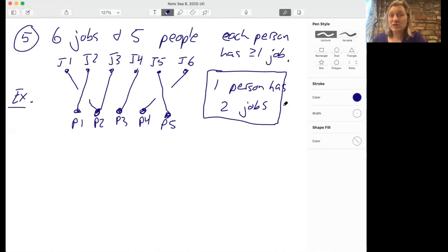And the first thing that we notice in making this example is that one person has two jobs. So that's nice because this is true no matter how we match up the people with jobs. If you were doing seven jobs and five people, this would be even a more tricky problem that we'll get to in chapter three.